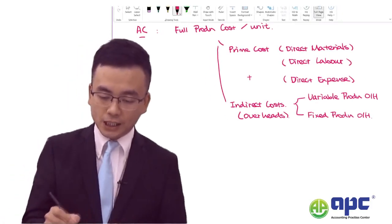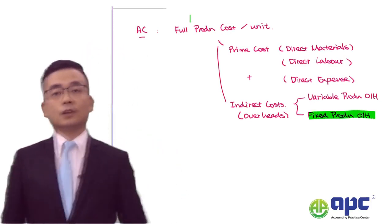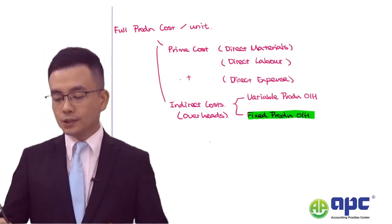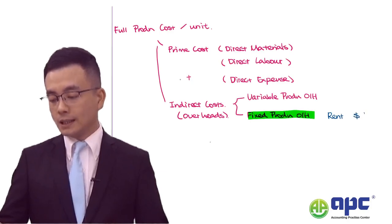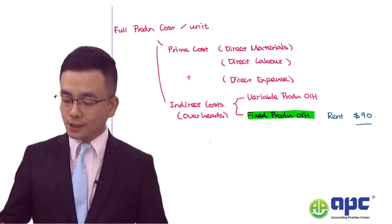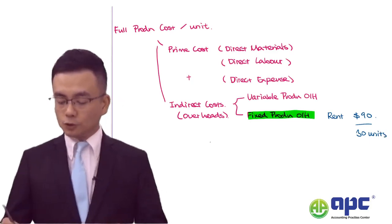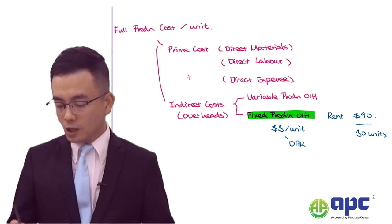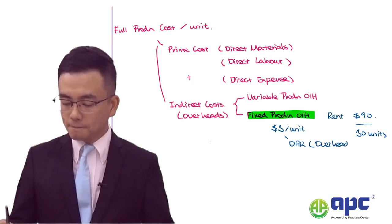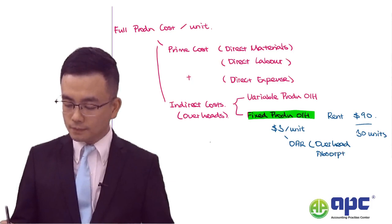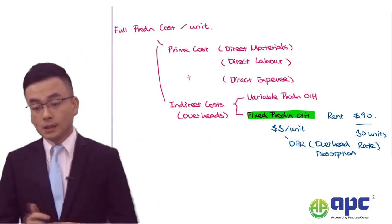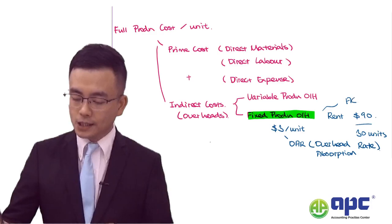Absorption costing specifically focuses on the fixed production overhead. For example, let's say the rental expense is $90 and we produce 30 units, so we charge $3 per unit. This is the OAR, or the overhead absorption rate, which is absorbed into the product — highlighted in green — and this is what absorption costing means.